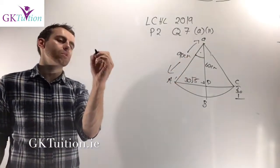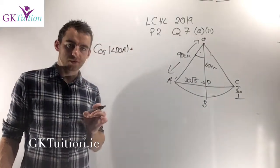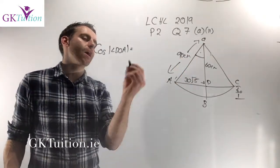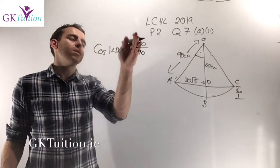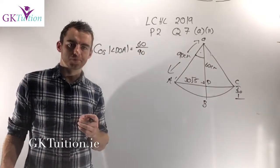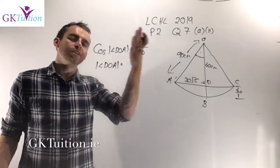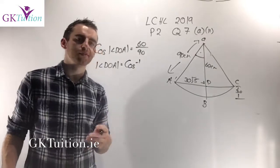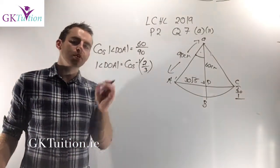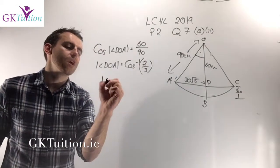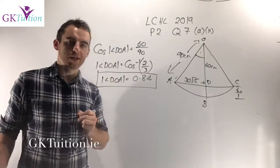I'll use cosine. The cosine of angle DOA equals the adjacent over the hypotenuse. The adjacent side is 60 centimetres and the hypotenuse is 90, so cos(DOA) = 60/90, which simplifies to 2/3. Making sure the calculator is in radians mode and applying cos inverse, the answer to two decimal places is 0.84 radians.